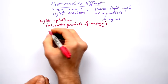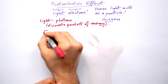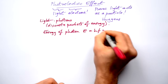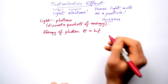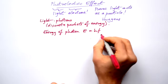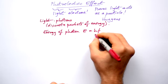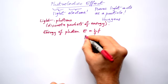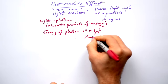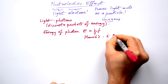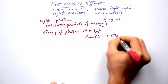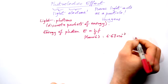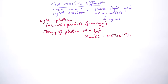The energy of one photon is E = hf, where f is the frequency of the light and h is Planck's constant — that's 6.63 × 10⁻³⁴ joule seconds.